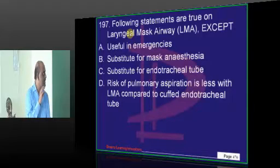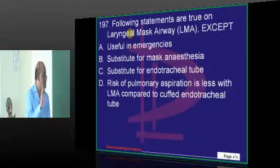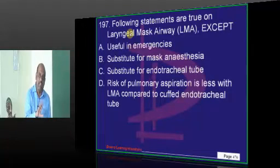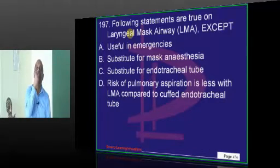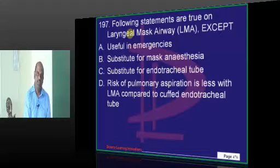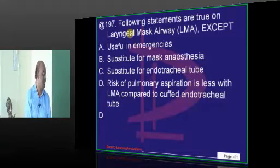Laryngeal mask versus ET tube with a cuff — what is the difference? With an ET tube with a cuff, pulmonary aspiration is less likely but not impossible — less likely than simple laryngeal mask airway. You pass the endotracheal tube and inflate the cuff in order to prevent aspiration.